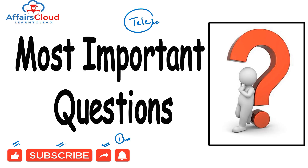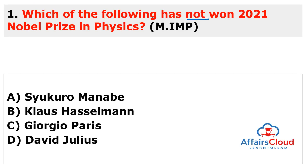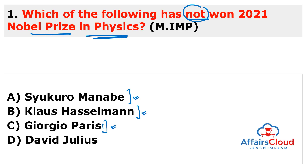Here is the first and most important question: Which of the following has NOT won the 2021 Nobel Prize in Physics? The options are Syukuro Manabe, Klaus Hasselmann, Giorgio Parisi, and David Julius. Syukuro Manabe, Klaus Hasselmann, and Giorgio Parisi all won this prize. The answer is D — David Julius.